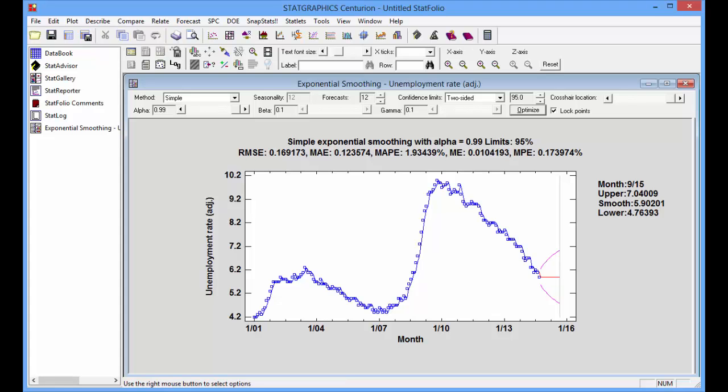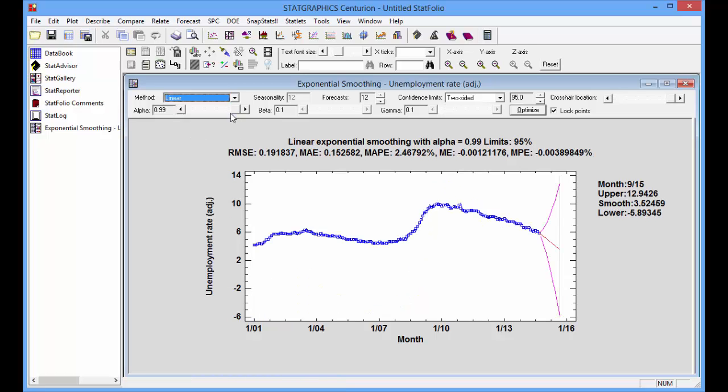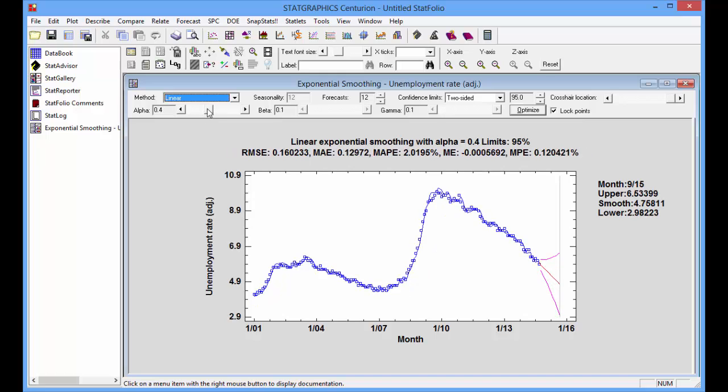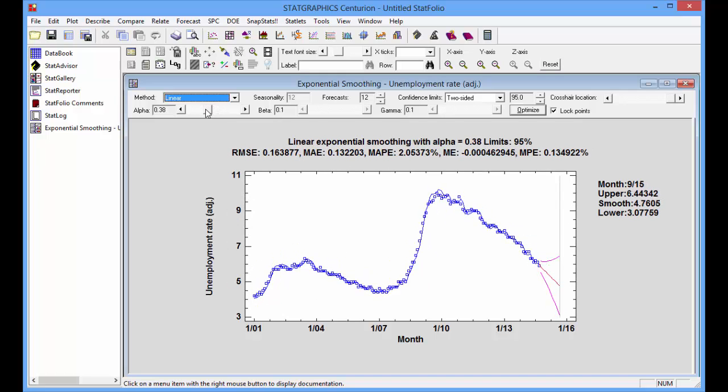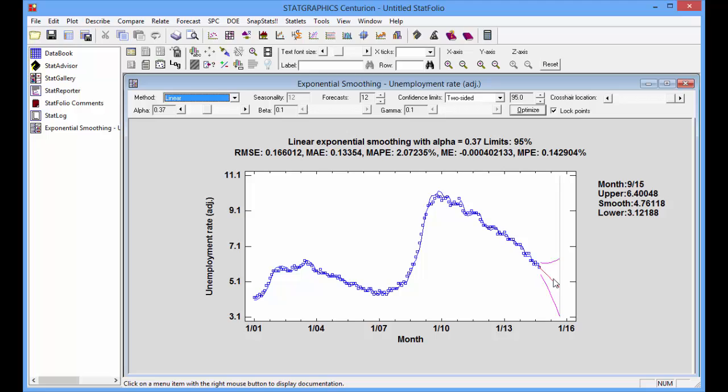Let's return to the statlet and try a different type of exponential smoothing. The drop-down list on the control bar for the statlet lets me change the method. I'll first select linear, which uses a single smoothing parameter alpha. Notice that the forecast function is now a downward sloping line rather than a horizontal line.